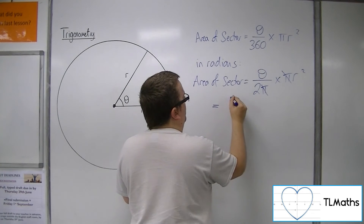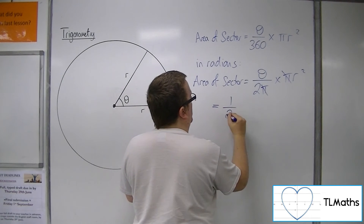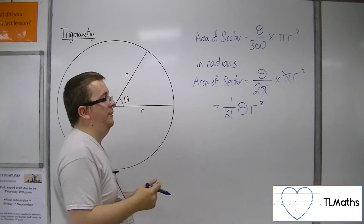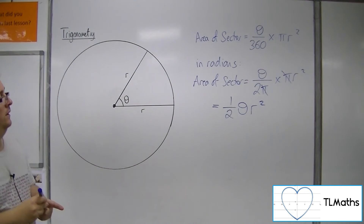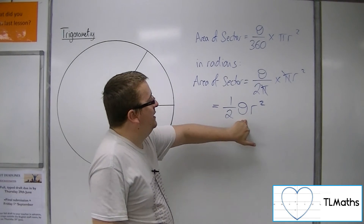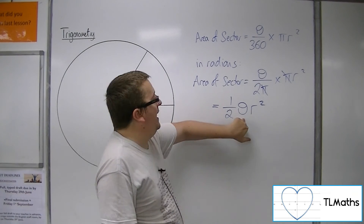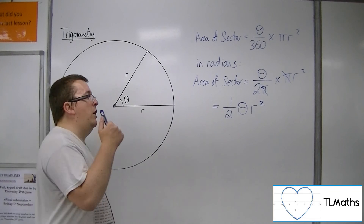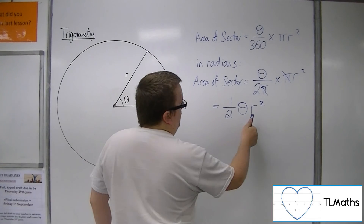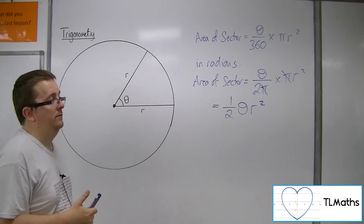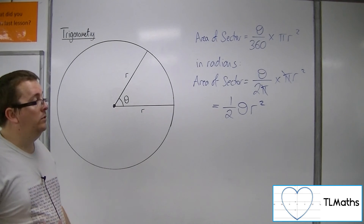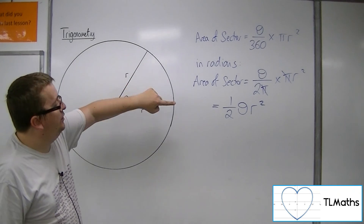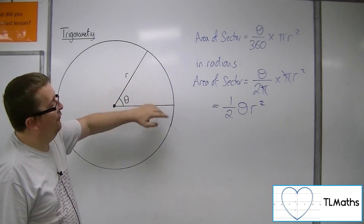So you can simplify it to one half θ r squared. So if you know the angle in radians and you know the radius of the sector or the circle, then you can work out the area of the sector using that formula.